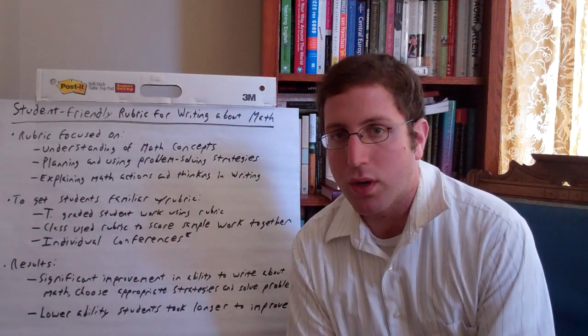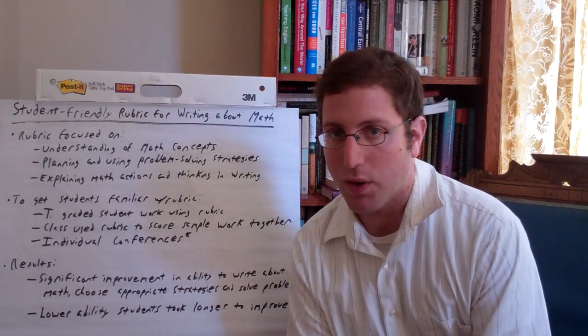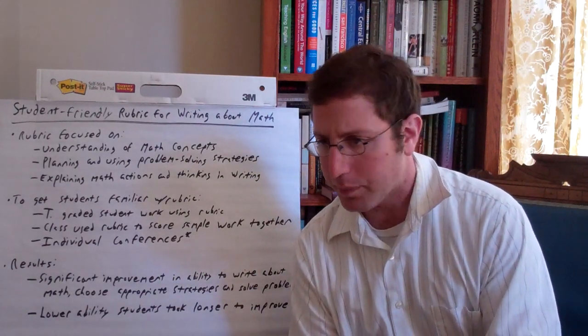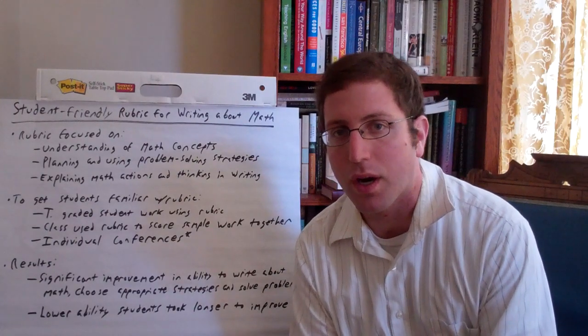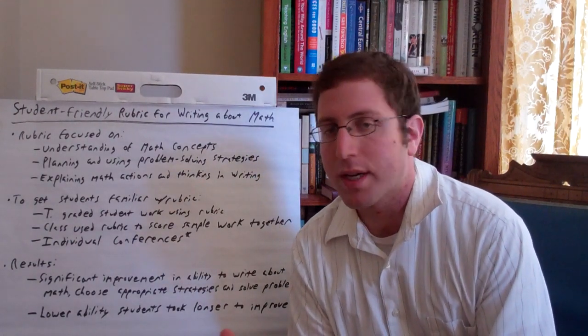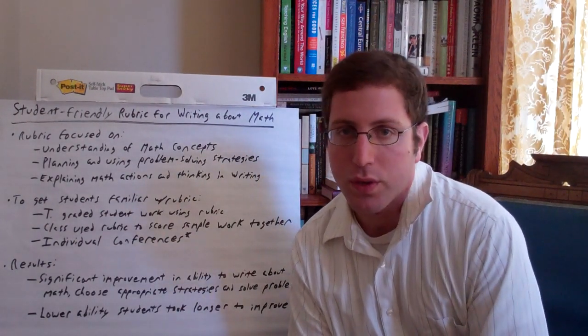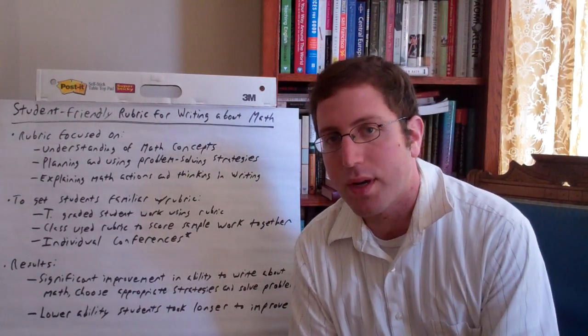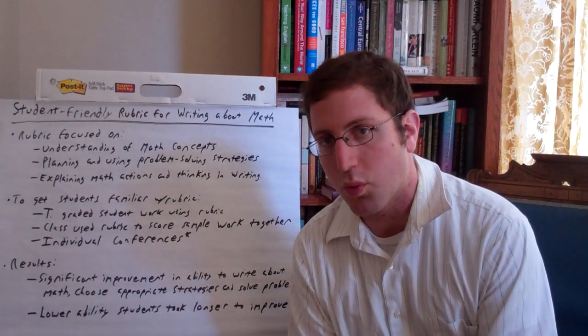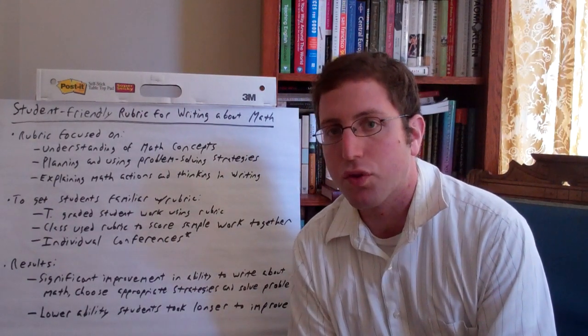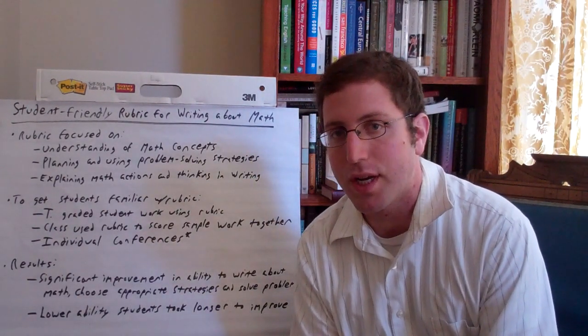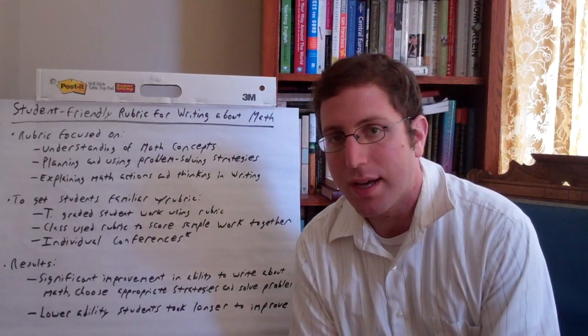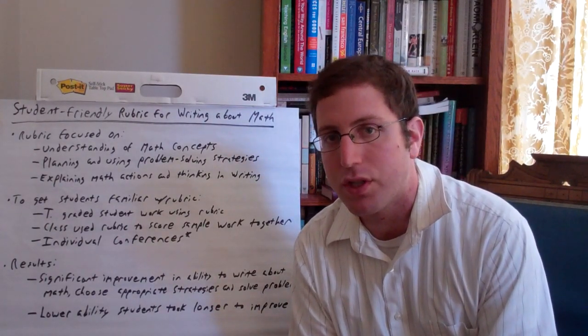So those individual conferences where teachers could ask some specific questions about the rubric: what do you think you would have gotten on the rubric here with regards to you choosing a strategy, and why, and what would you need to do to improve to the next level? Those sorts of very specific questions while looking at individual students' work were the single greatest impact strategy that the teacher was able to use with especially those average and below-average students.